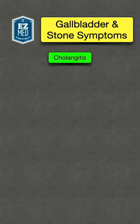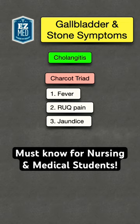You can remember the symptoms using Charcot's triad, which is fever, right upper quadrant abdominal pain, and jaundice.